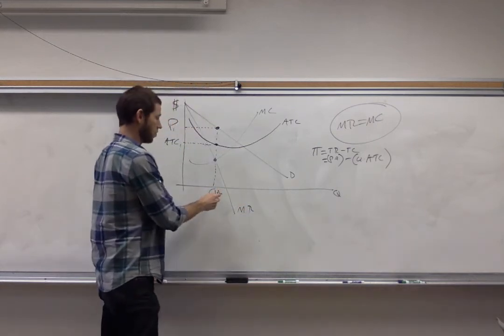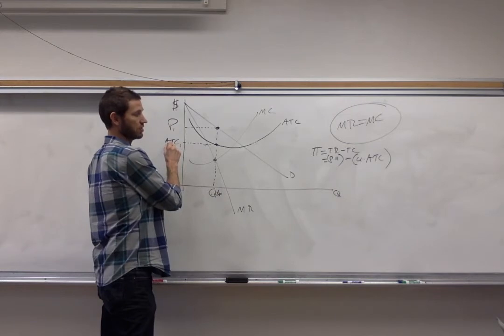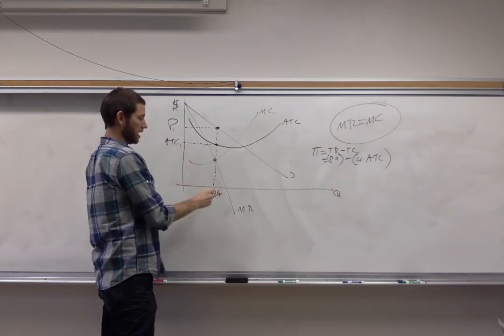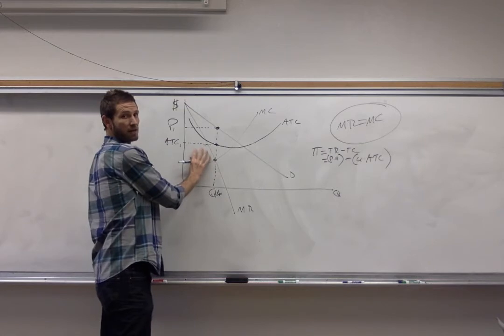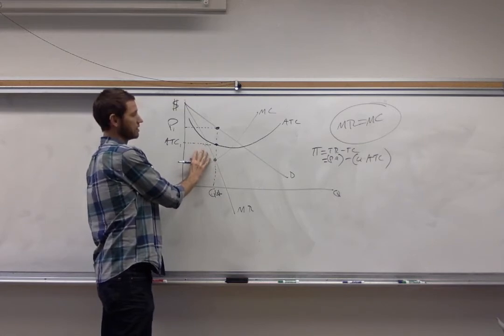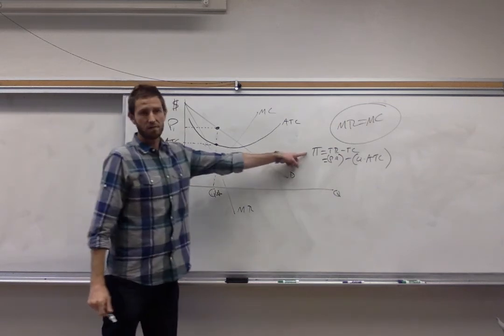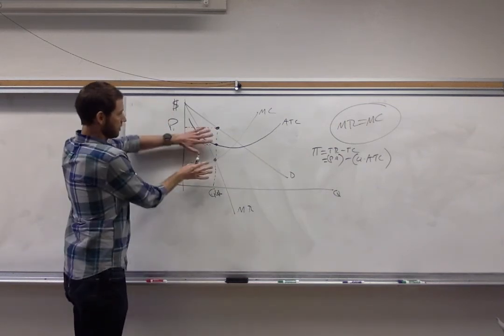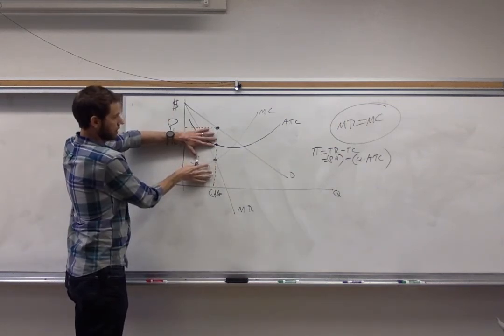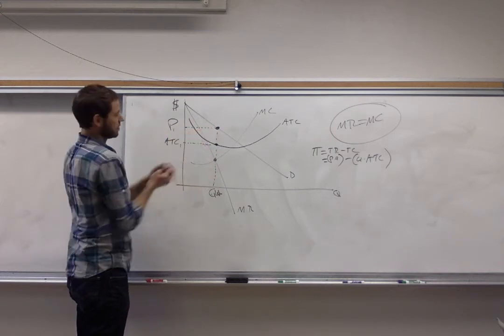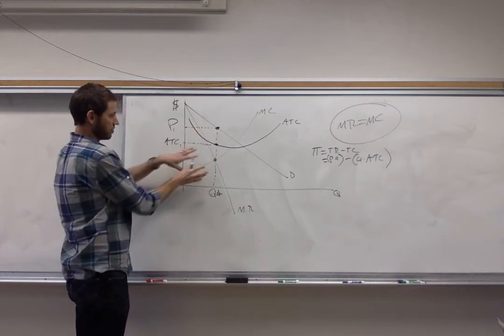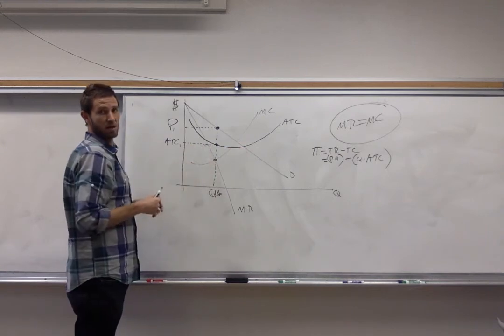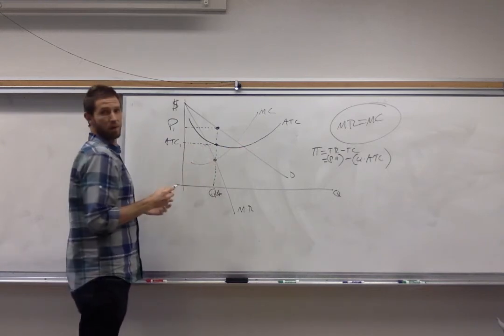And once again, we have quantity and we have average total cost. So if you're going to multiply those two together, quantity and ATC, this lower rectangle down here would represent your total cost. So to find the profit, you would want to take the big rectangle, just including everything I'm covering up with my hands, and subtract from it the smaller rectangle underneath. That's the total cost. The difference between the two is your profit.